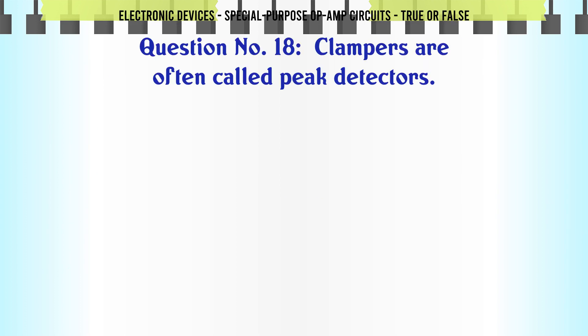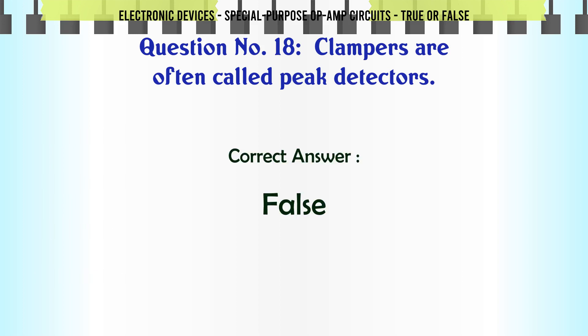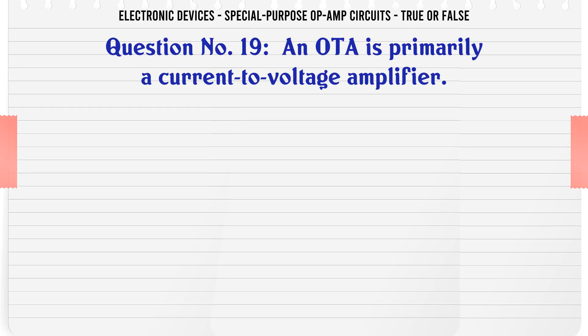Clampers are often called peak detectors. A. True. B. False. The correct answer is False.